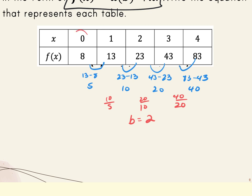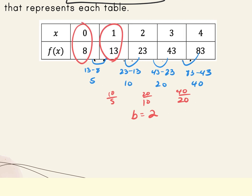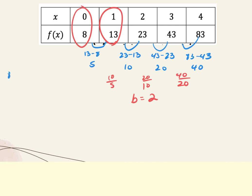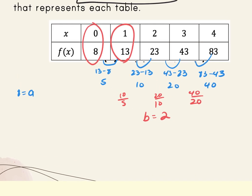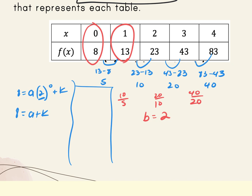Then plug in two points — I'll pick the first two, but you could pick any of them. The y is 8, a is unknown, b is 2, x is 0 plus k. That gives 8 equals a plus k. The second equation: 13 equals a times 2 to the first plus k, or 13 equals 2a plus k.